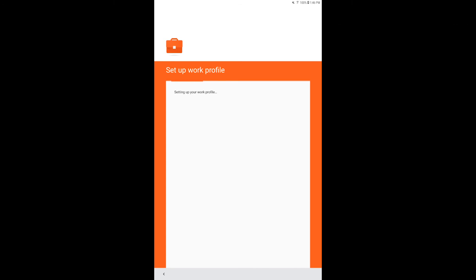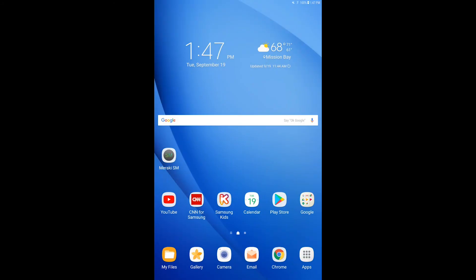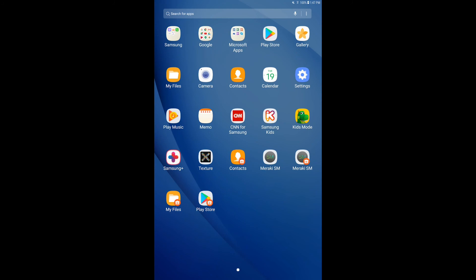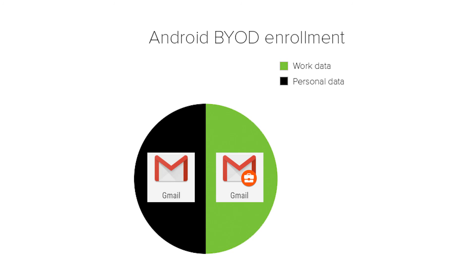After this finishes, you'll get a message that says you need to use the badged version of the app now, and that the main app will now start the uninstalling process. The badged app icons you'll now notice are on the device's home screen. These badged icons are the apps inside that work container that Systems Manager has control of. The apps without the badged icon are inside the personal container, outside of Meraki Systems Manager's control.